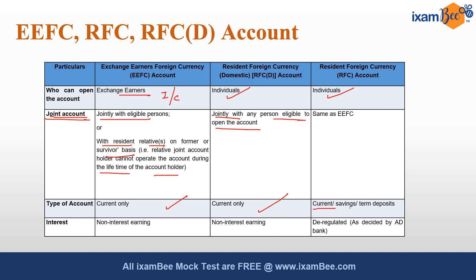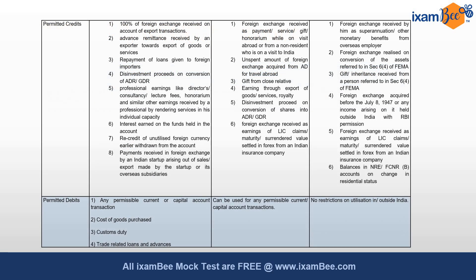The RFC (Resident Foreign Currency) account can be current, savings, or term deposit. The EEFC account is a non-interest earning account; RFC(D) is also non-interest earning; and RFC is interest earning, which is deregulated — meaning the interest rate is as decided by the authorized dealer bank. Now, what are the permitted credits and debits from these accounts?